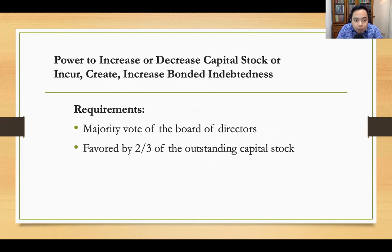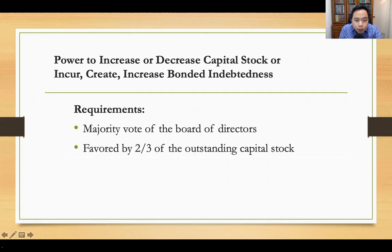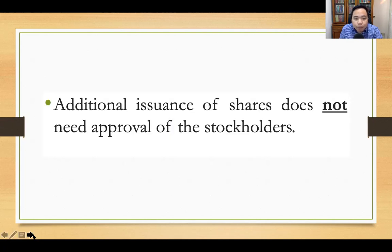Take note of the voting requirements: before the corporation can increase or decrease its capital stock, or incur, create, or increase bonded indebtedness, a majority vote of the board of directors is required, coupled with the concurrence of stockholders representing at least two-thirds of the outstanding capital stock.